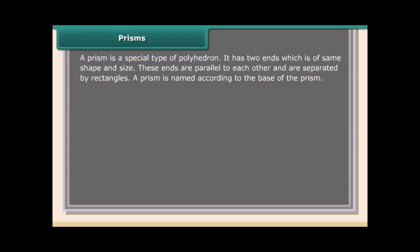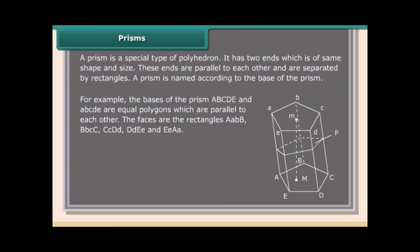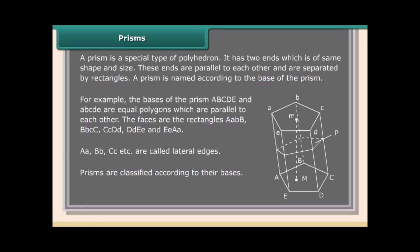A prism is a special type of polyhedron. It has two ends of the same shape and size. These ends are parallel to each other and are separated by rectangles. A prism is named according to its base. The bases are equal polygons parallel to each other, and the lateral faces are rectangles. The line segments where lateral faces meet are called lateral edges.